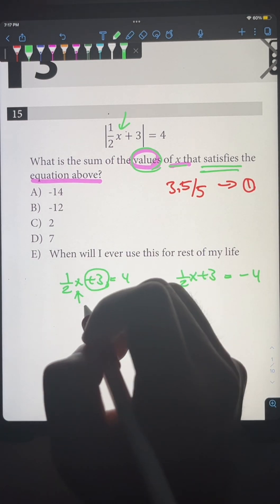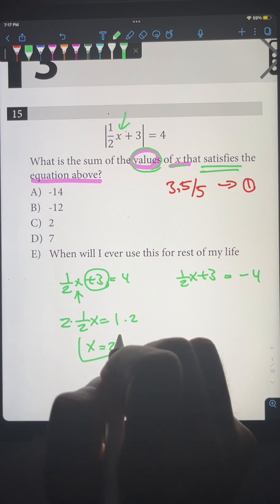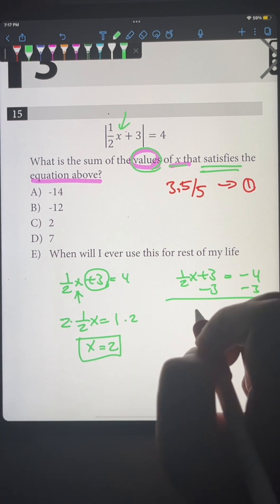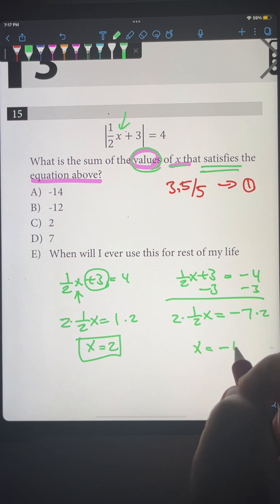First, subtract 3 to get ½x = 1, multiply by 2 on both sides, and we get x = 2. That's one of them. For the second equation, same thing: minus 3, we get ½x = -7, multiply by 2 on both sides, and we get x = -14.